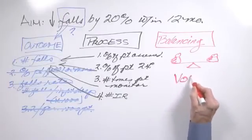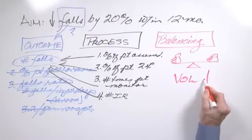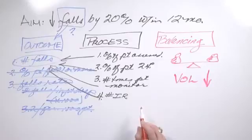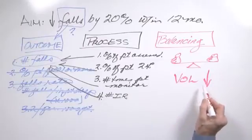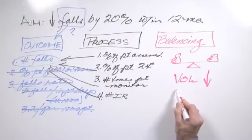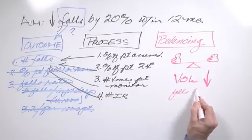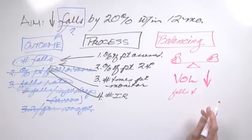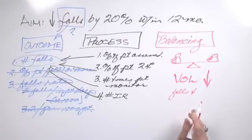For example, let's imagine that volume of admissions went down. What effect would that have on the number of falls? Well, most likely, if the volume of patients coming into the system went down, the likelihood that you might see a drop in falls as well. Just because there are fewer people in the hospital, people can attend to those who are admitted and watch them more vigilantly.